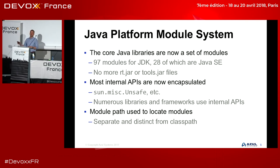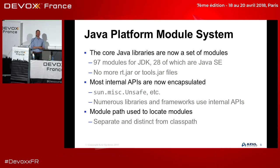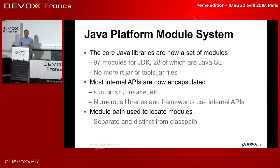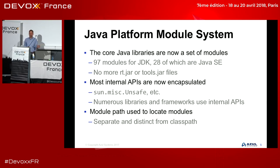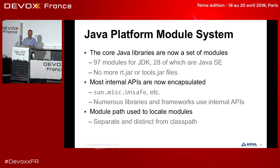What we've ended up with in JDK 9 and JDK 10 is 97 modules. Of those, 28 are defined by the Java SE standard — the ones in the JSR. Then there are eight for JavaFX, two Oracle-specific, and a whole group that are JDK-specific. The key thing: no more RT.jar, no more tools.jar. If you were writing an application that used those files directly, they're no longer there, so you need to think about how to change that.